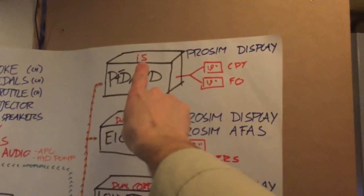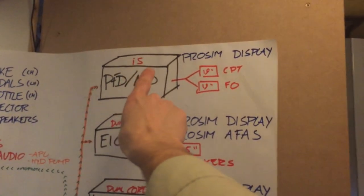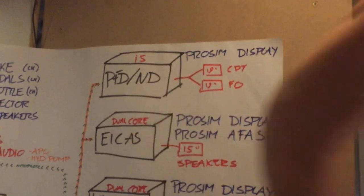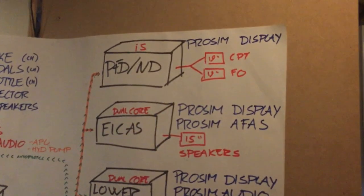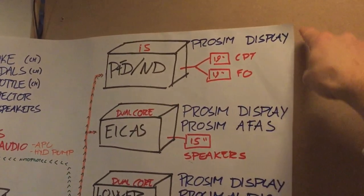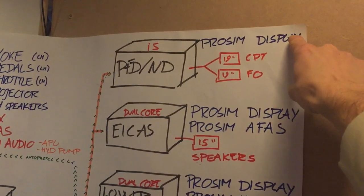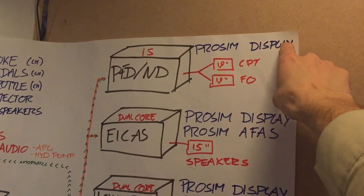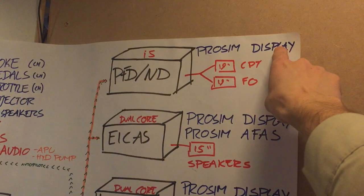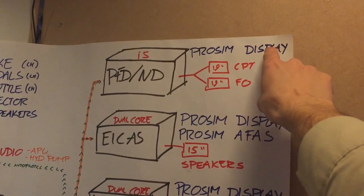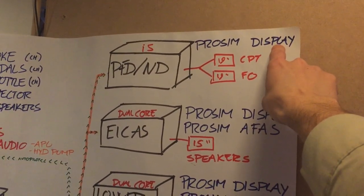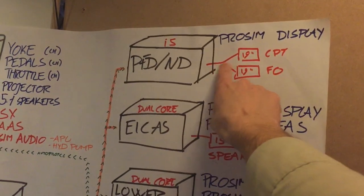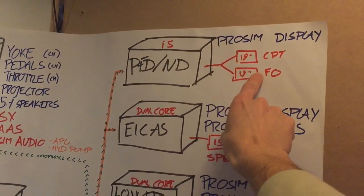The first computer up here is actually an Intel i5 — pretty powerful. It runs the primary flight display and navigation display. The reason this is a powerful computer is that displaying terrain or weather can be quite heavy, so the more powerful the better. That's also why it only runs ProSim display.